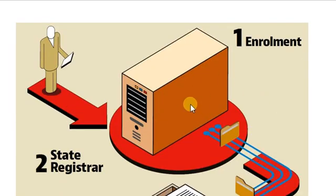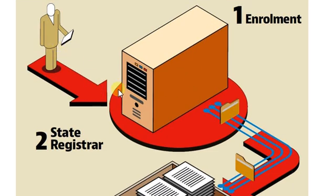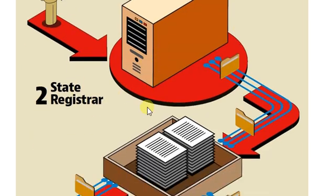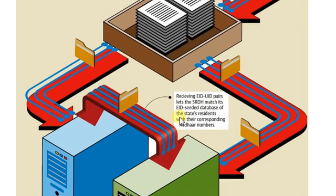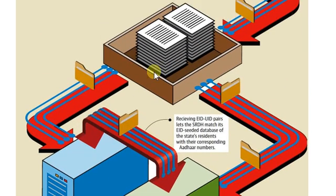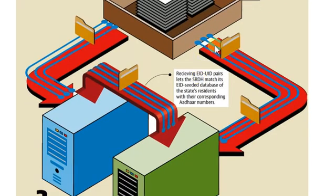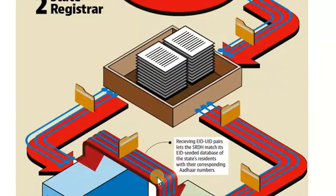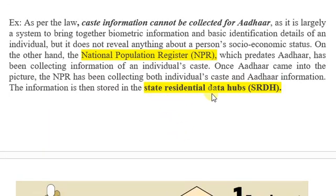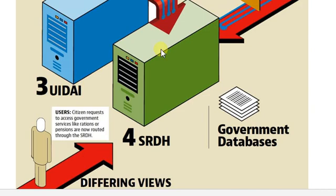During the enrollment process, a person's data is collected and transferred through a double-layer entity structure. Identification details go to UIDAI (Aadhaar), while caste details, residence, and other socio-economic details are given to the SRDH — the State Residential Data Hub. Since Aadhaar should not be directly linked with caste details, the data has been separated: personal identification details go to UIDAI, and other details such as caste and socio-economic information go to the State Registered Data Hub.